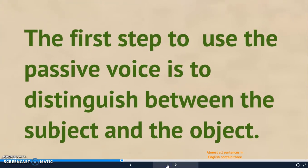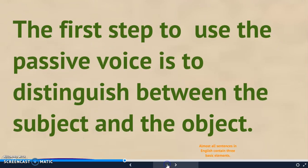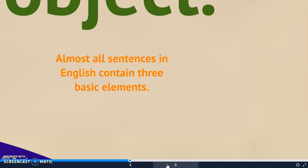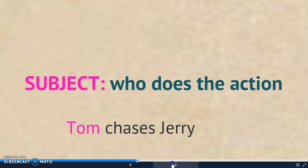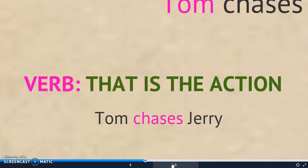The first step to use the passive voice is to distinguish between the subject and the object. Almost all sentences in English contain three basic elements that you need to know. The first one is the subject — the subject is who does the action. In this case, 'Tom chases Jerry' — Tom does the action, Tom is the subject. The second basic element is the verb. The verb is the action itself. In the sentence 'Tom chases Jerry,' chases is the action — that is the verb.